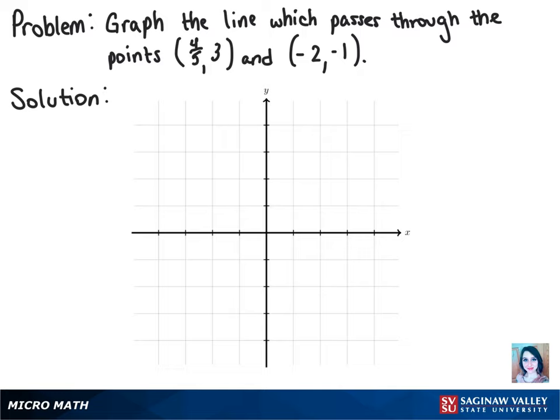To graph the line which passes through the points four-fifths comma three and negative two comma negative one, we first want to plot these points. Let's move over four-fifths on the x-axis and up three. Then for our second point, we move to the left on the x-axis two units and then down one. Once we connect these points, we have our line.